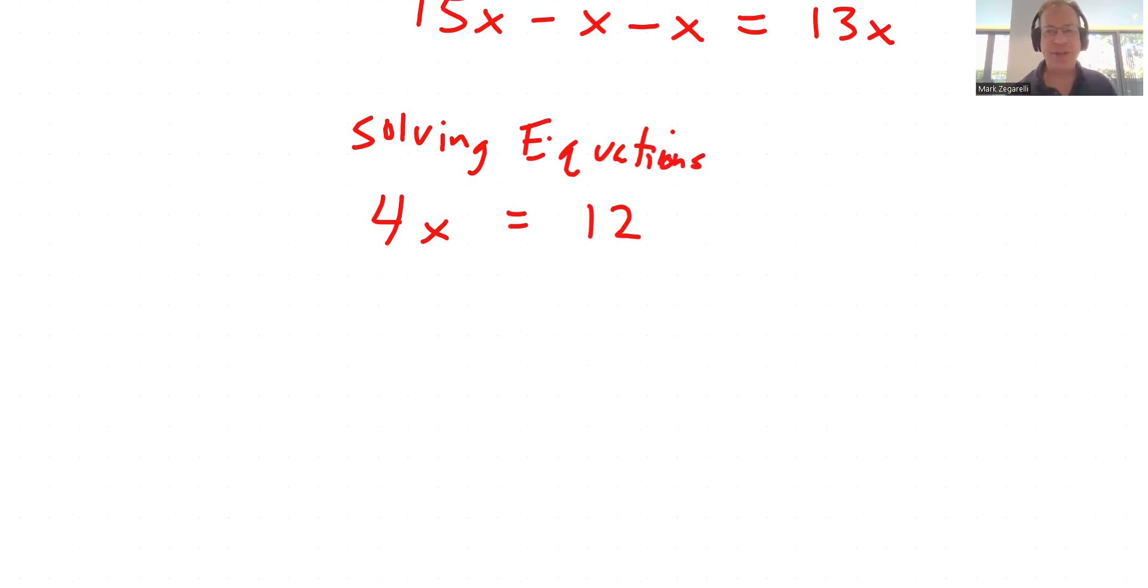A little bit of practice on this. See if you can get out in front of me and say the answer before I tell it to you. 4x equals 12 - 4 times something equals 12 - x equals 3. That's the solve right there.